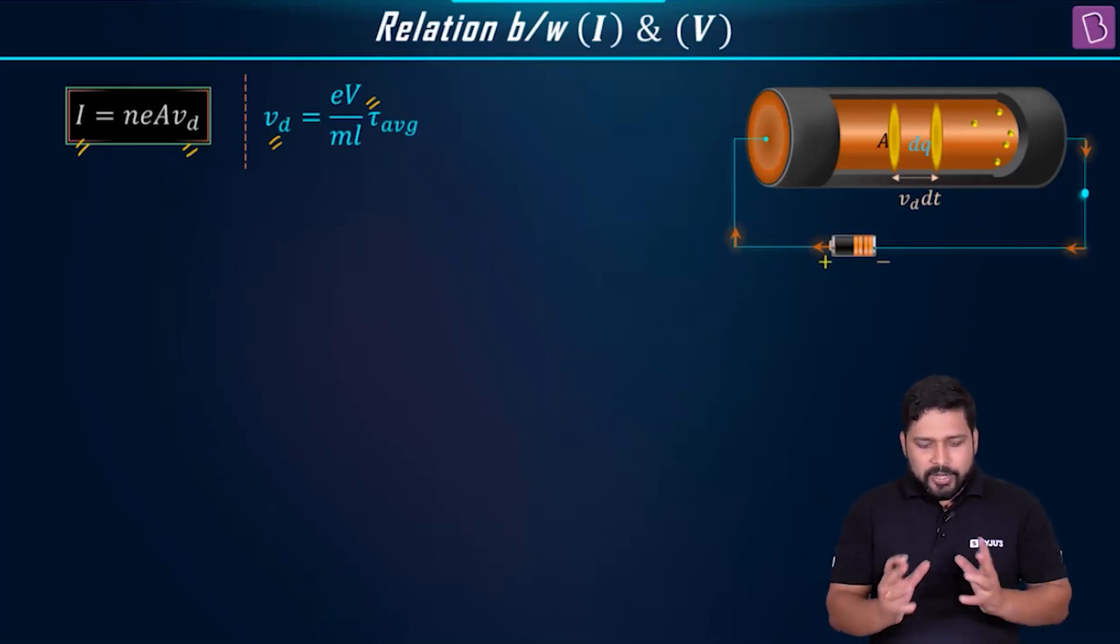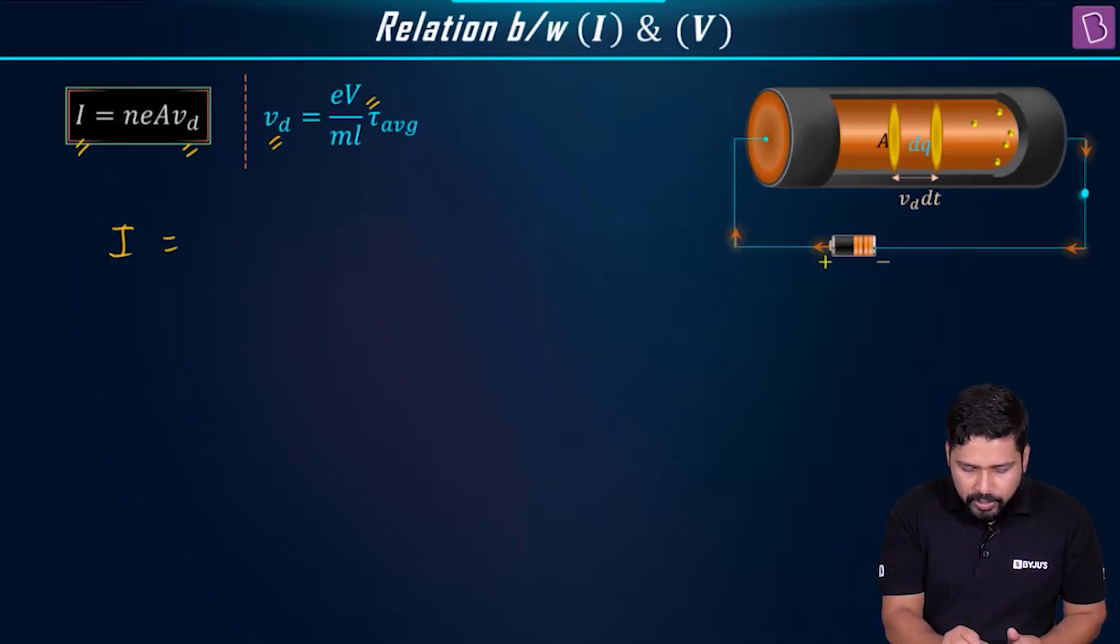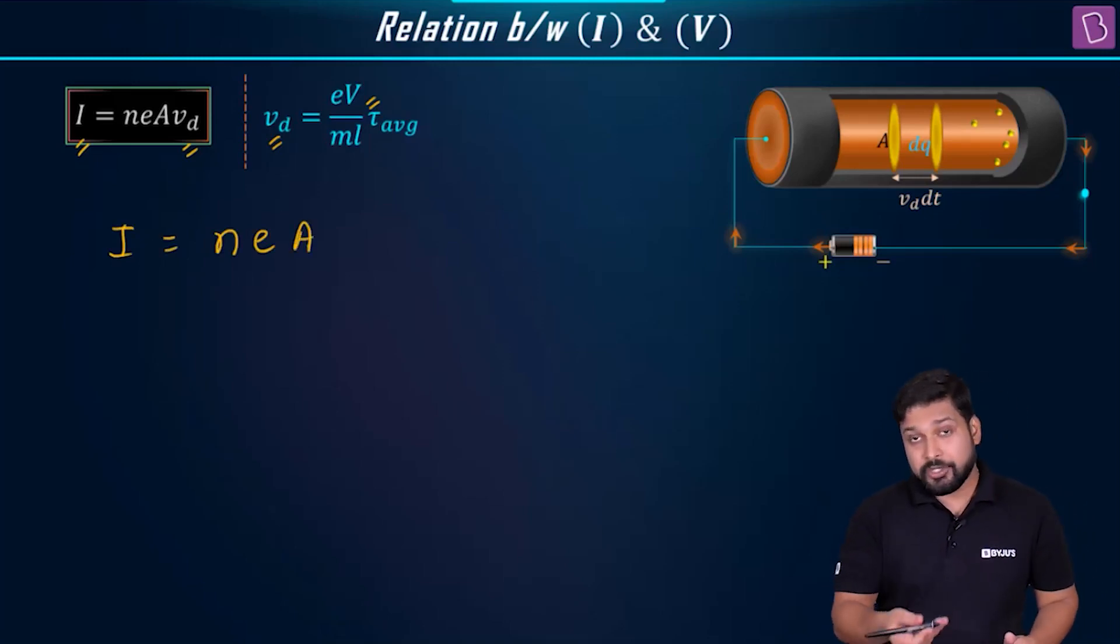So if I want to get a relation, can I write I equals N E A, and instead of V_D, can I write the expression of drift velocity in terms of potential difference?